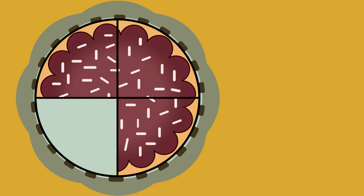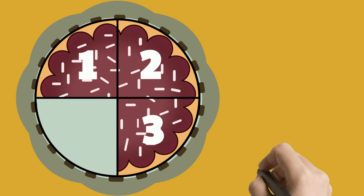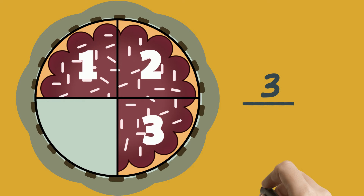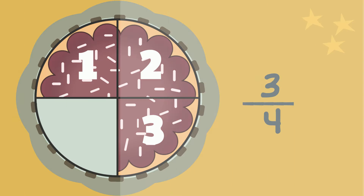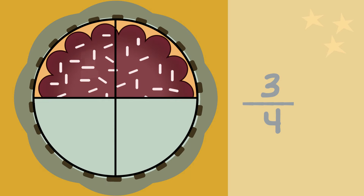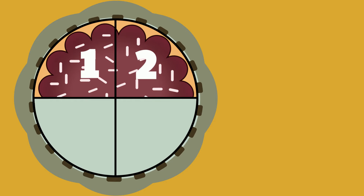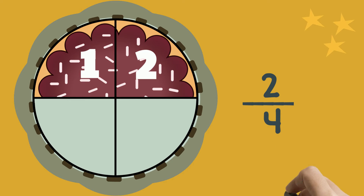But what if Dad comes into the kitchen and swipes a piece of cake? Now we only have three pieces, or three-fourths of the whole. Since Dad swiped a piece of cake, Mia decides to eat one too. Now we only have two pieces, or two-fourths of the whole.